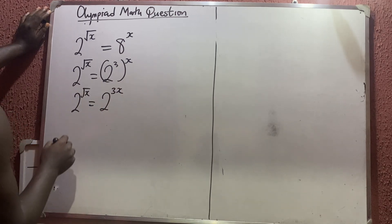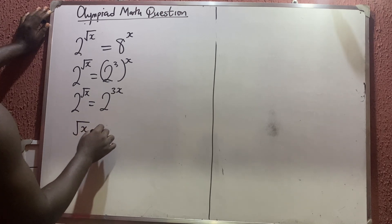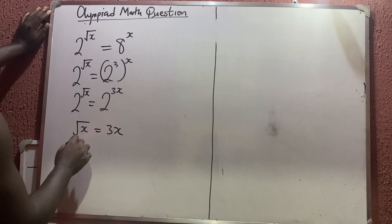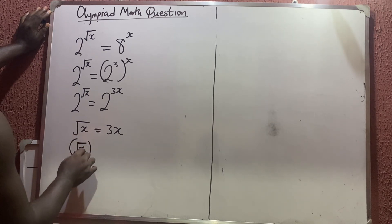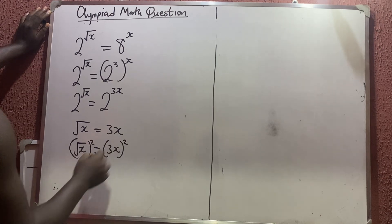So if the base is cancelled out, we'll have that the square root of x is equal to 3x. So if I square both sides, I'm going to have that the square root of x all squared is equal to 3x all squared.